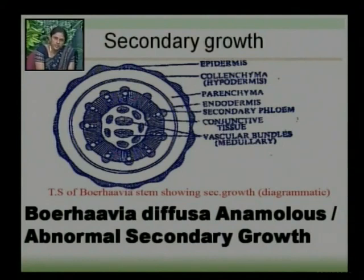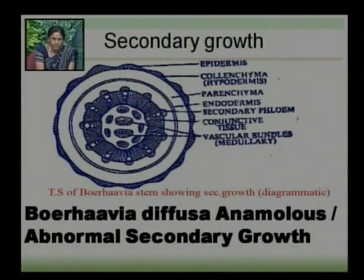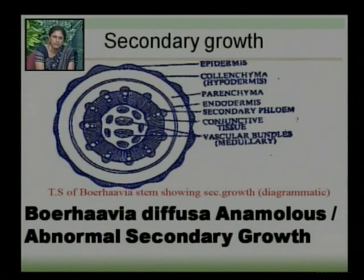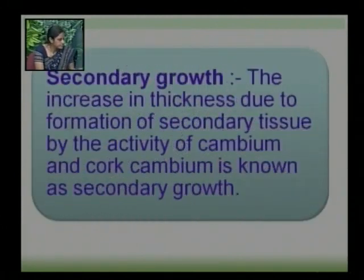Among the three vascular bundle rings, the middle ring and the inner ring are known as medullary rings, because they lie towards the pith. That's why they are known as medullary vascular bundles.